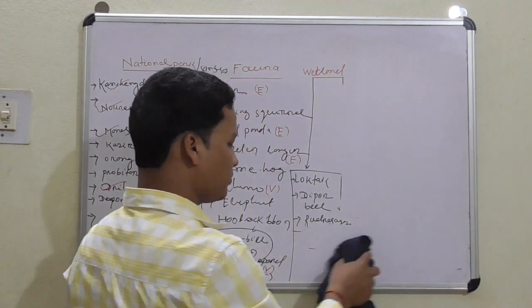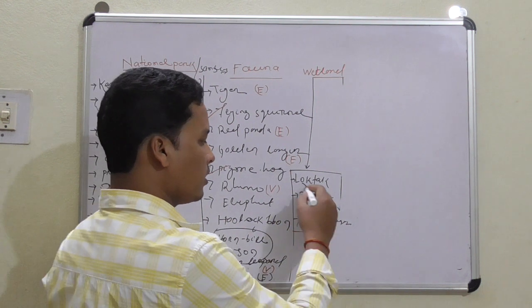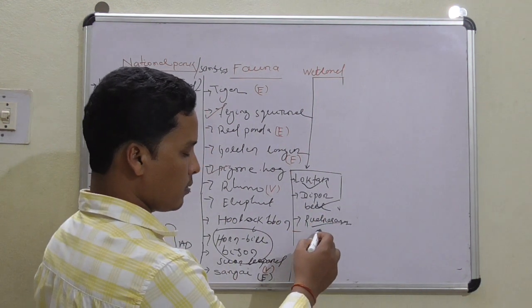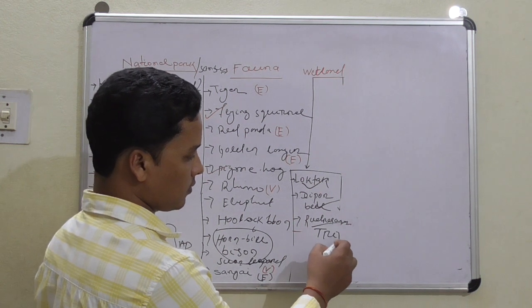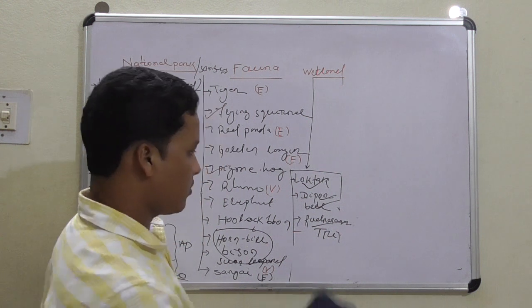Next, I will come to the wetlands. Wetlands are Loktak Lake in Manipur, Deepor Beel in Assam, and Rudrasagar in Tripura.